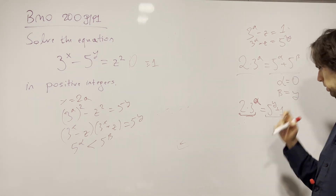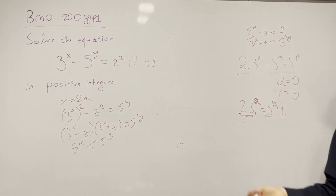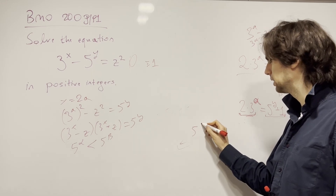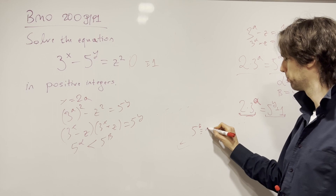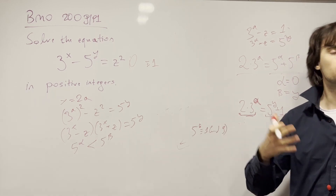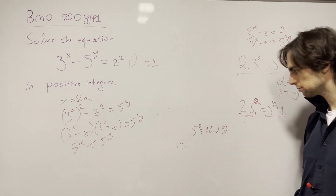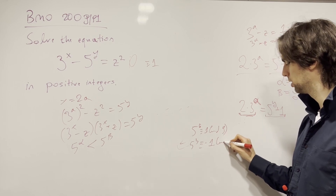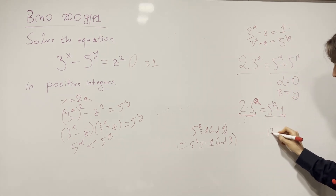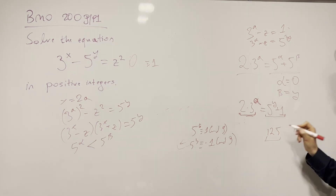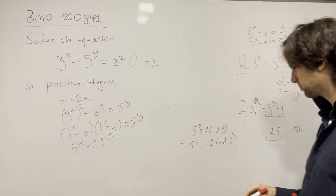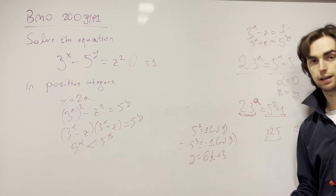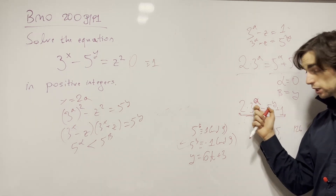There are many ways to proceed. Let me look at modulo 9 — what happens with 5^y modulo 9, given that 2 · 3^a is divisible by 9 when a ≥ 2. Under what conditions is 5^y + 1 divisible by 9? We find that 5^3 = 125 ≡ −1 modulo 9 (since 126 is divisible by 9), and the period is 6. So this tells us that y must be of the form 6t + 3 for some non-negative integer t.